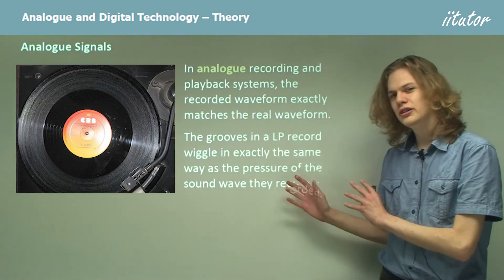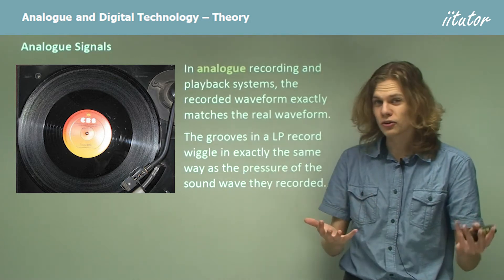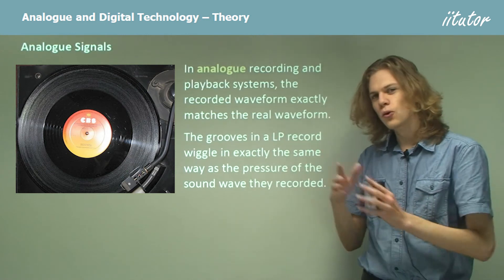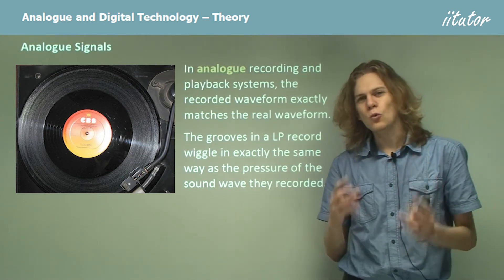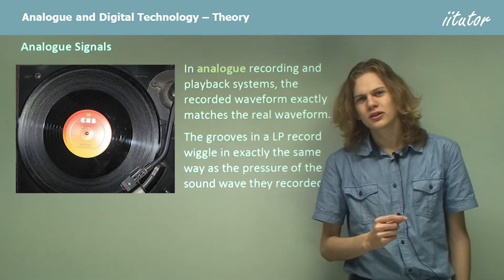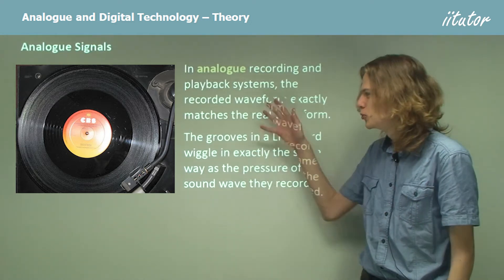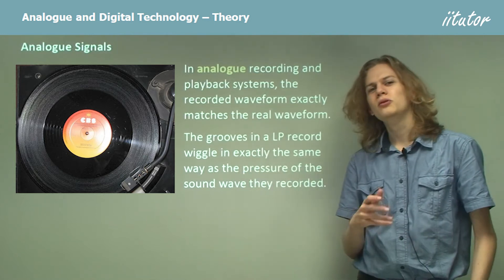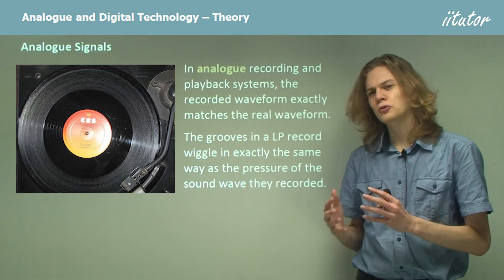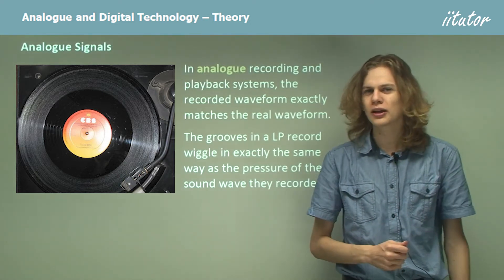The grooves in an LP record, which we can see over here — a bit of old technology but bear with me — will move back and forth in exactly the same way that the air pressure in the sound wave moves back and forth. If you could zoom in and get a microscopic picture of one of the grooves, it would be varying up and down exactly in the same way as the sound wave that produced it, and indeed the sound wave that it produces when you play it.